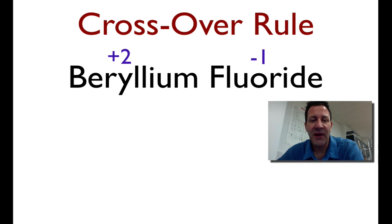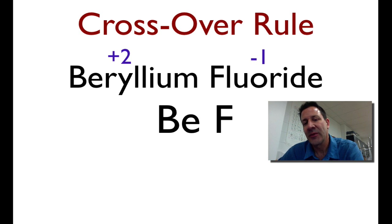Now, we write those down. And then the next thing I do is I just write down the symbols for the elements. So I write down the symbol for beryllium, maybe leave a little space, and then I write down the symbol for fluorine. So I have my BeF, that's my basic structure what I'm going to start with, and then I'm going to cross over.